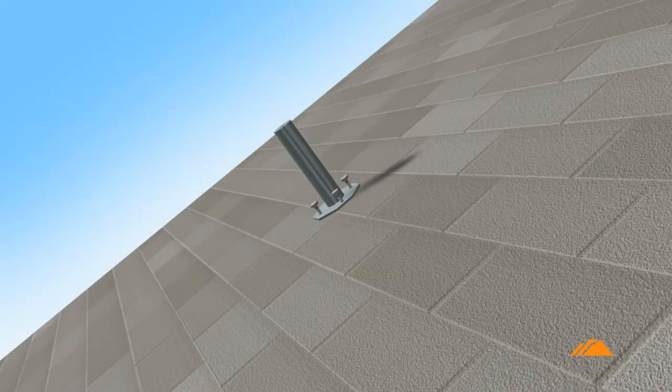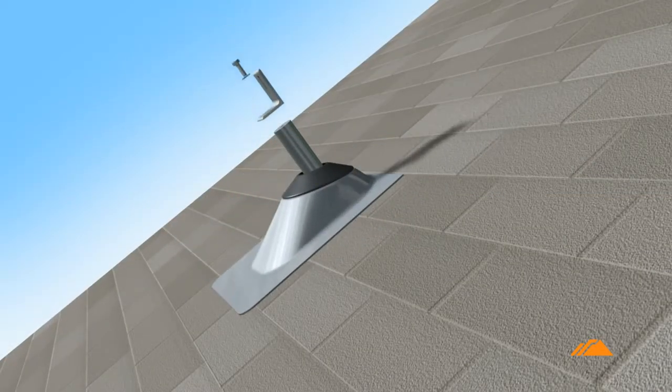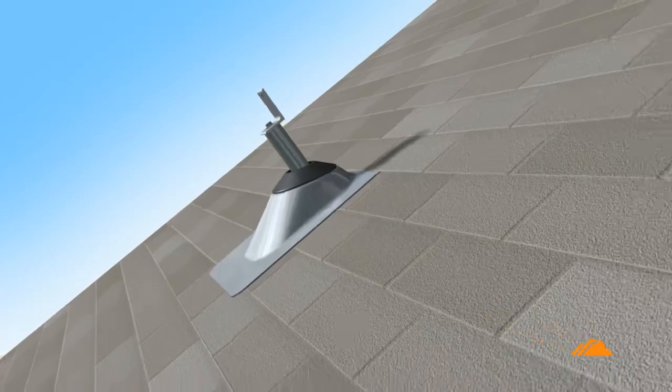To install the Iron Ridge Integrated Grounding System, first install roof flashings and L-feet.